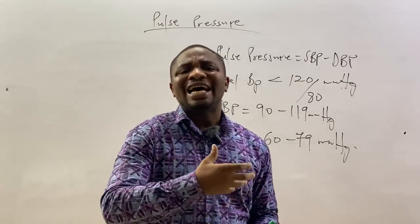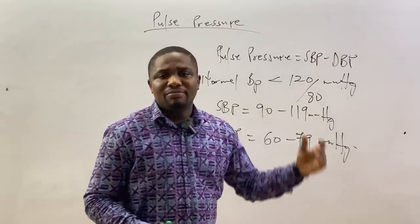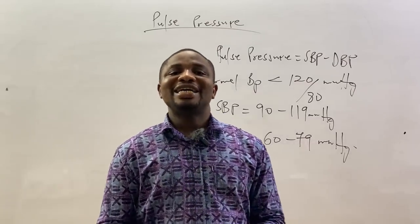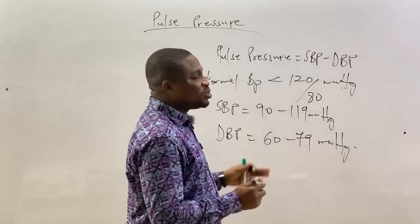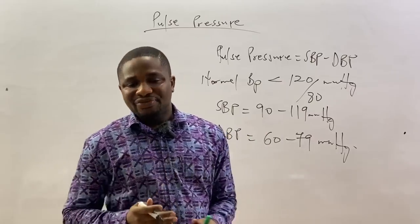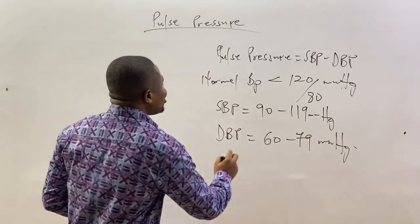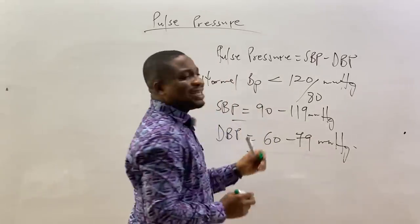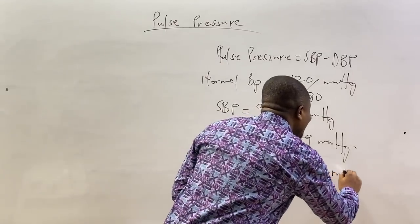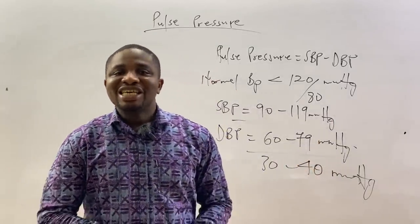Normal blood pressure should not be in the hypotensive range. Once we have the normal blood pressure, how do we get the normal pulse pressure? Pulse pressure equals systolic minus diastolic. Take the lower limits: 90 minus 60 equals 30. Take the upper limits: 119 minus 79 equals 40. So the normal pulse pressure is 30 to 40 mmHg.